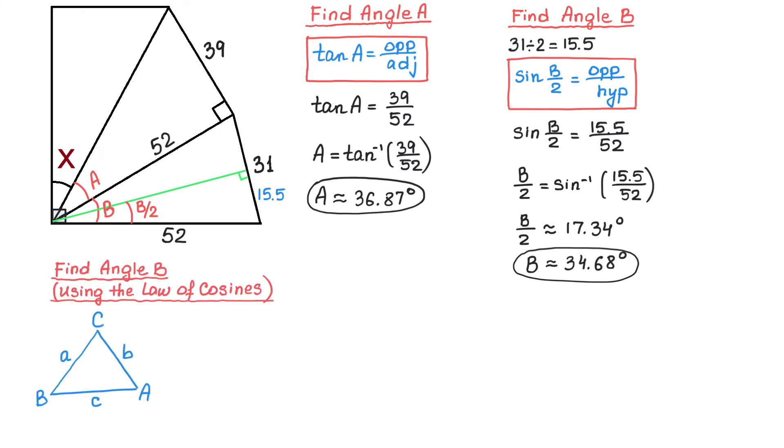To review the formula, here we have a triangle with sides A, B and C and the angles A, B and C. Notice that angle A is opposite of side A, angle B is opposite of side B, and angle C is opposite of side C.